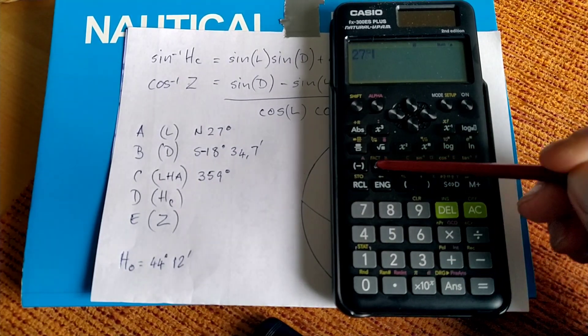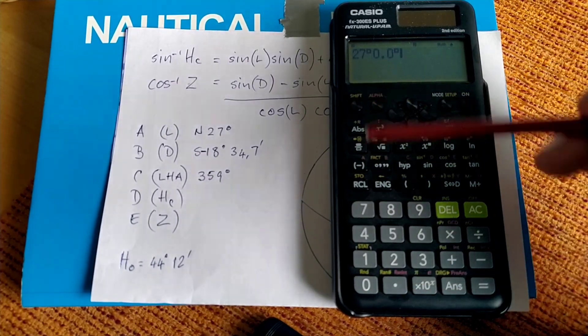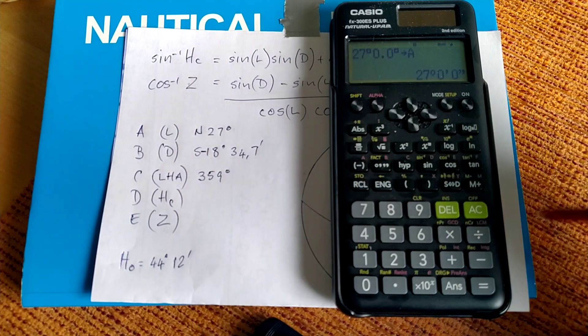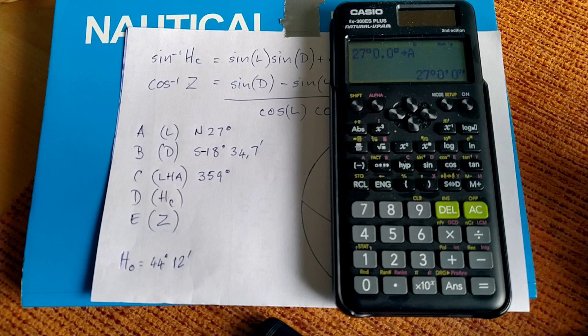So here's our calculator, and it's already been switched on. And the first thing we're going to do is assign the latitude to variable A. So let's get cracking. 27 degrees, 0.0 minutes, shift, store, A. So we've assigned the latitude of the dead reckoning to variable A.